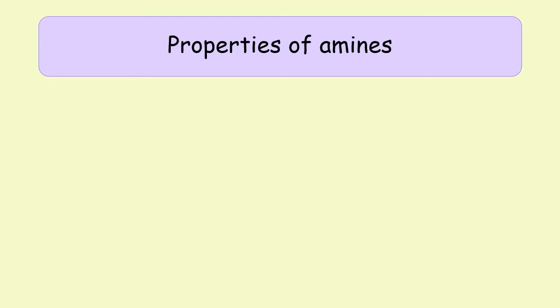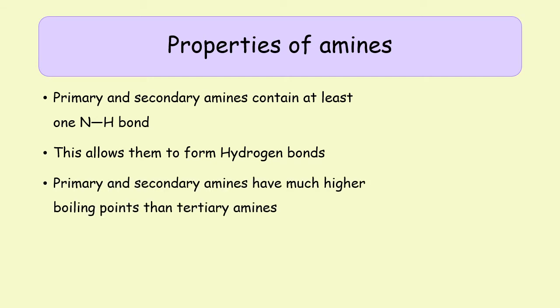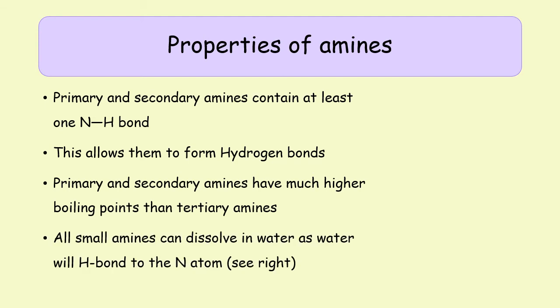Amines have slightly different properties depending on whether they are primary, secondary, or tertiary. Primary and secondary amines still contain nitrogen-hydrogen bonds, meaning they are capable of forming hydrogen bonds, which are the strongest intermolecular forces. This causes primary and secondary amines to have higher melting and boiling points. Tertiary amines do not have any N-H bonds and therefore cannot form hydrogen bonds — they are simply polar.